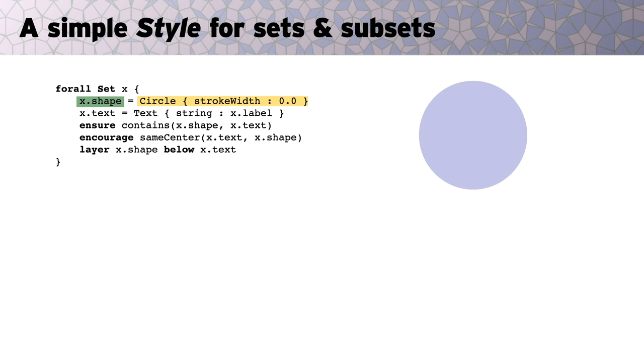Each set is assigned a shape field that constructs a circle. The circle has some free parameters, like the center and radius, that will be chosen later by the optimizer. It also gets a text field for its label. The ensure keyword indicates that a condition must be enforced, here that the circle contains its label. Likewise, the encourage keyword asks Penrose to try to keep the label close to the circle's center. These statements will get translated into constraints and objectives by the compiler. The layer keyword simply says that the text should be drawn on top of the circle.